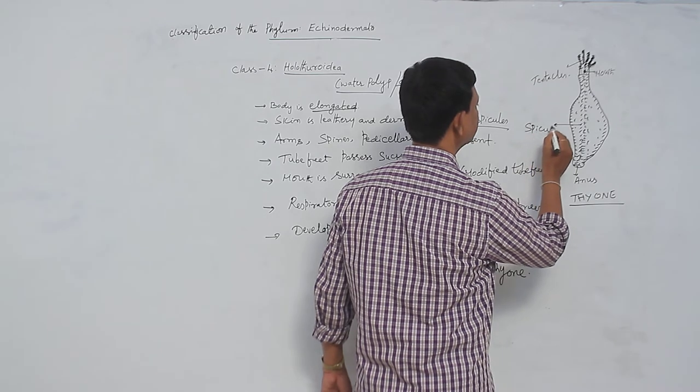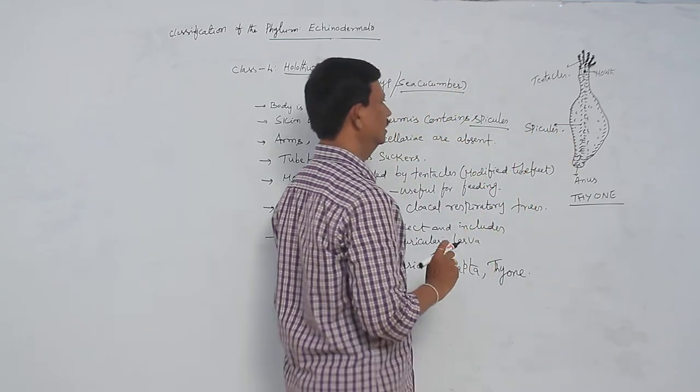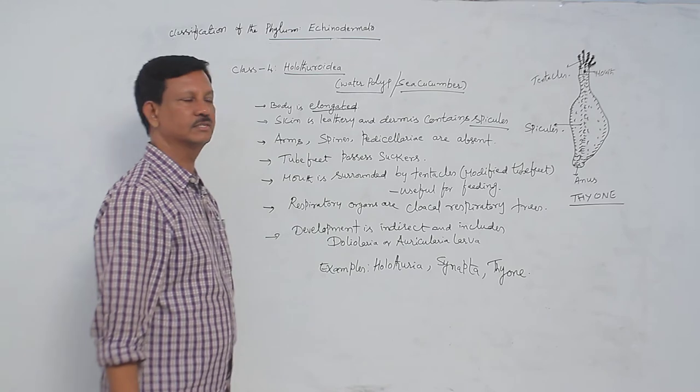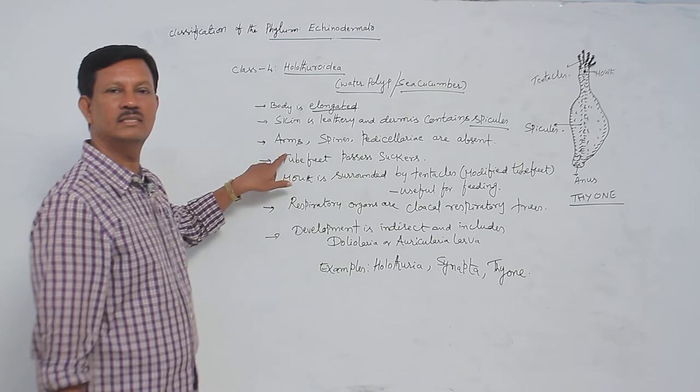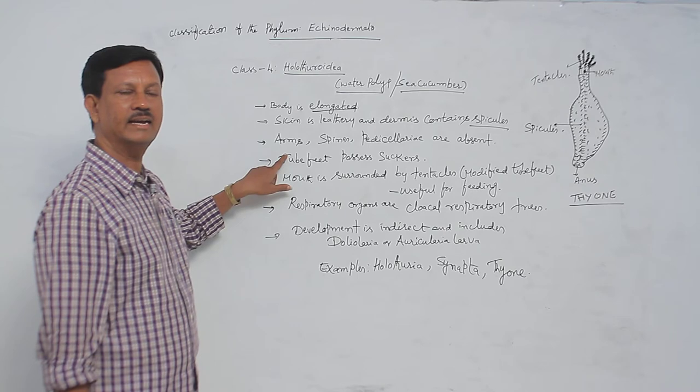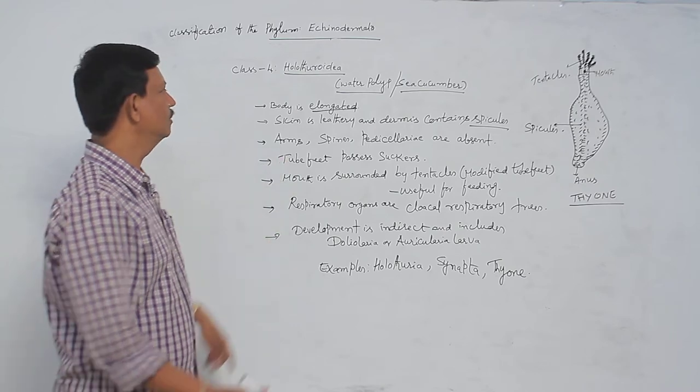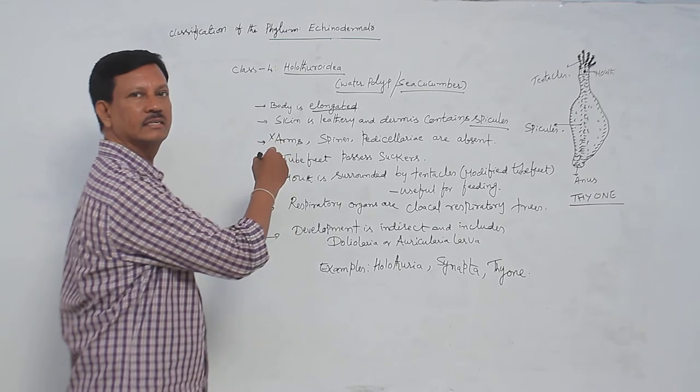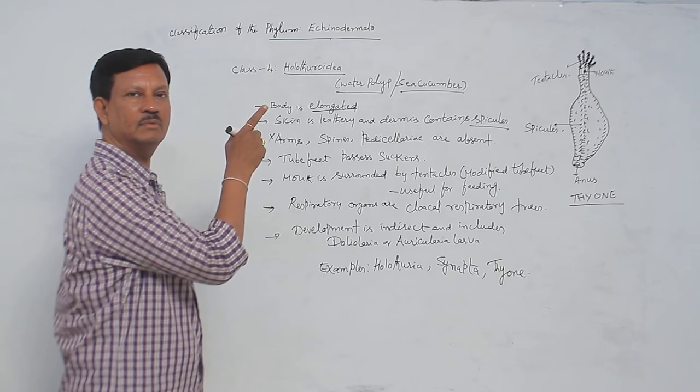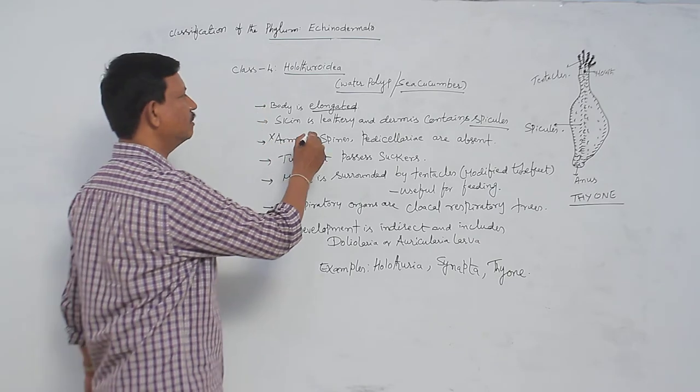Dermis contains the spicules and arms. There are no arms present. Generally in Echinodermata arms are present, but here no arms are present. Echinodermata means spiny-skinned animals, but here spines are also absent.